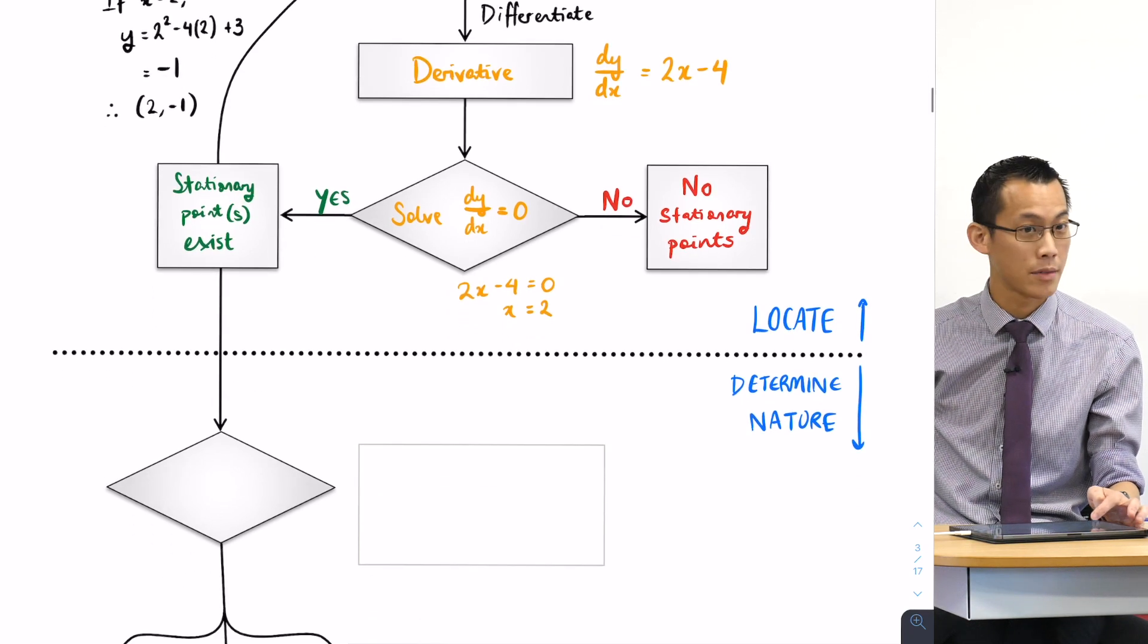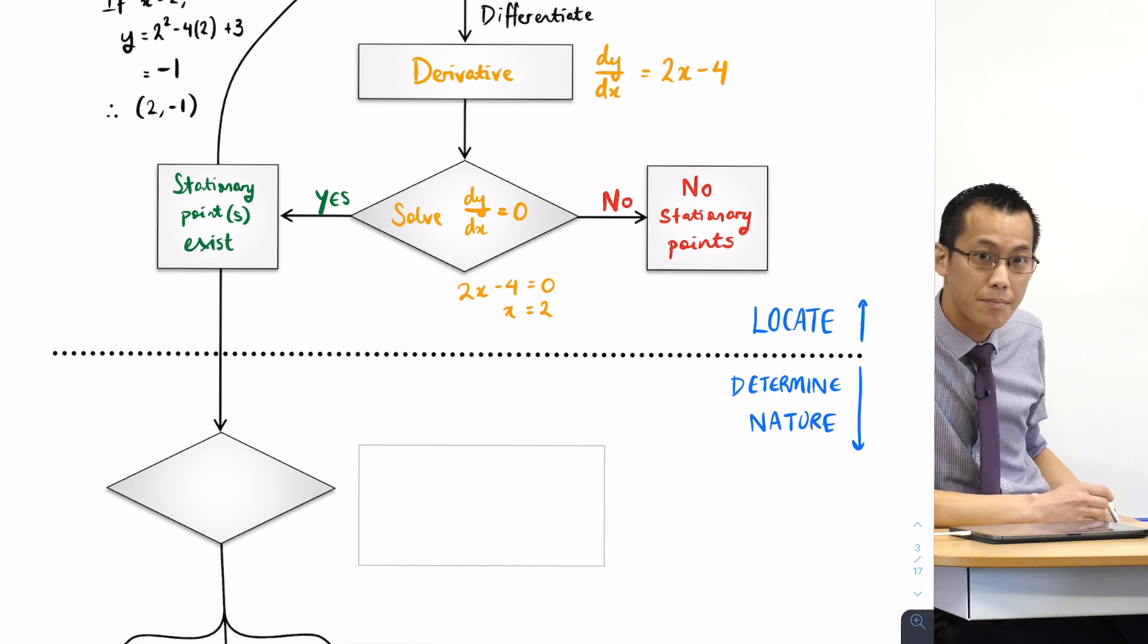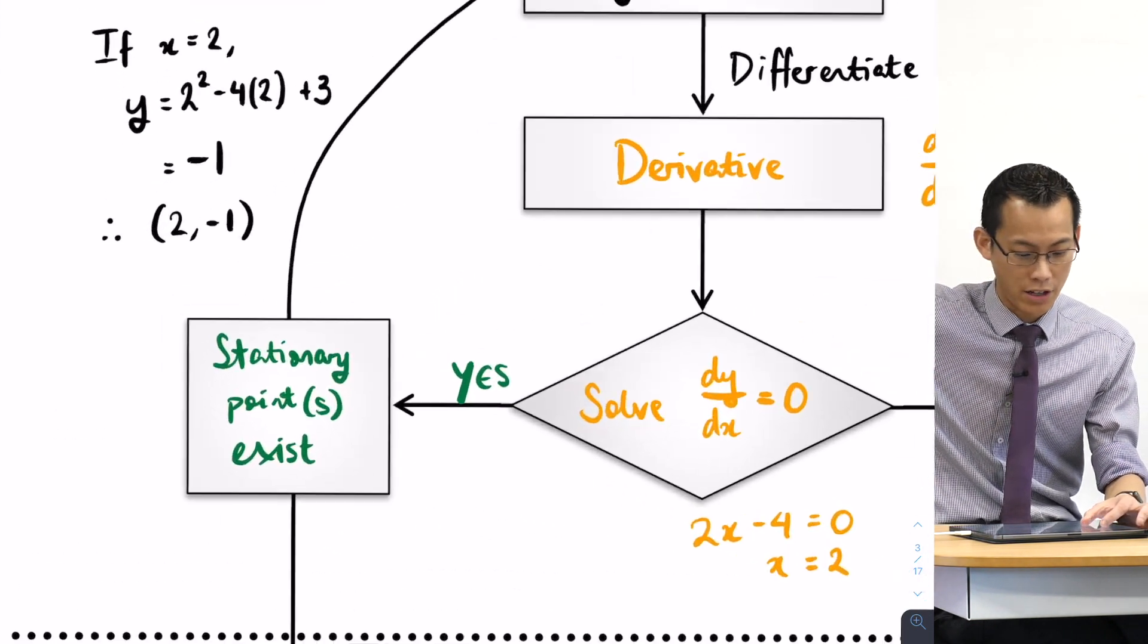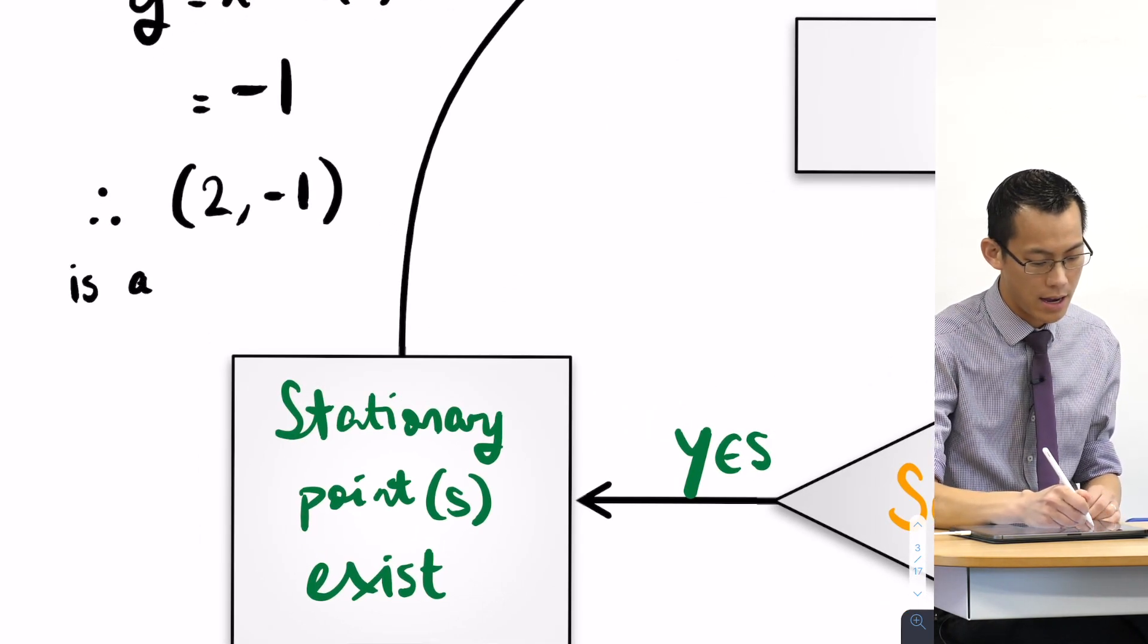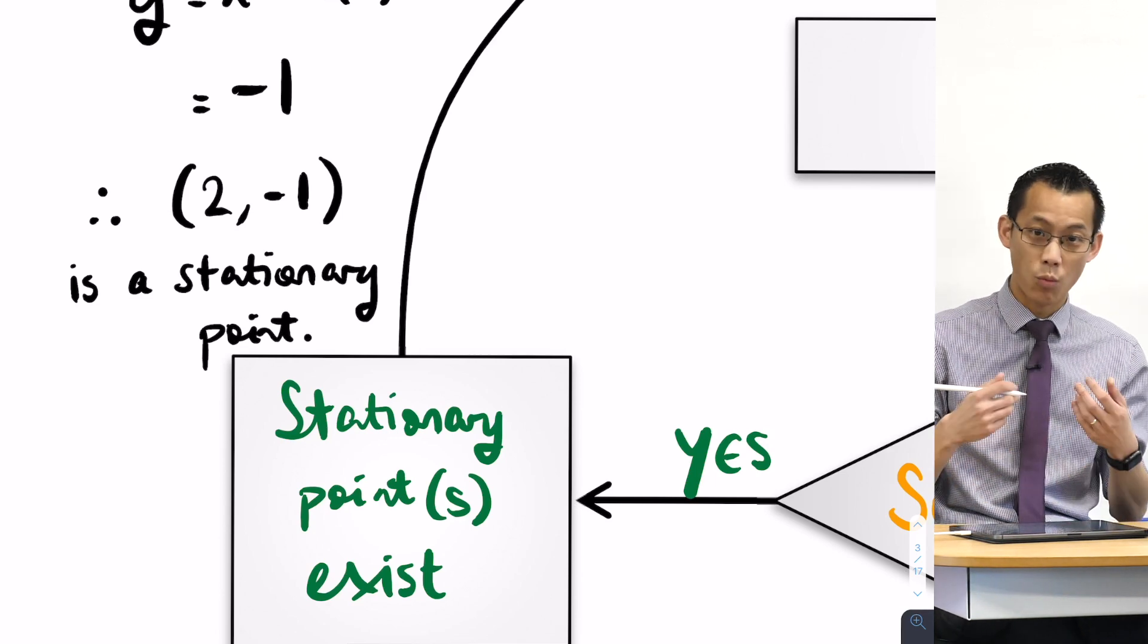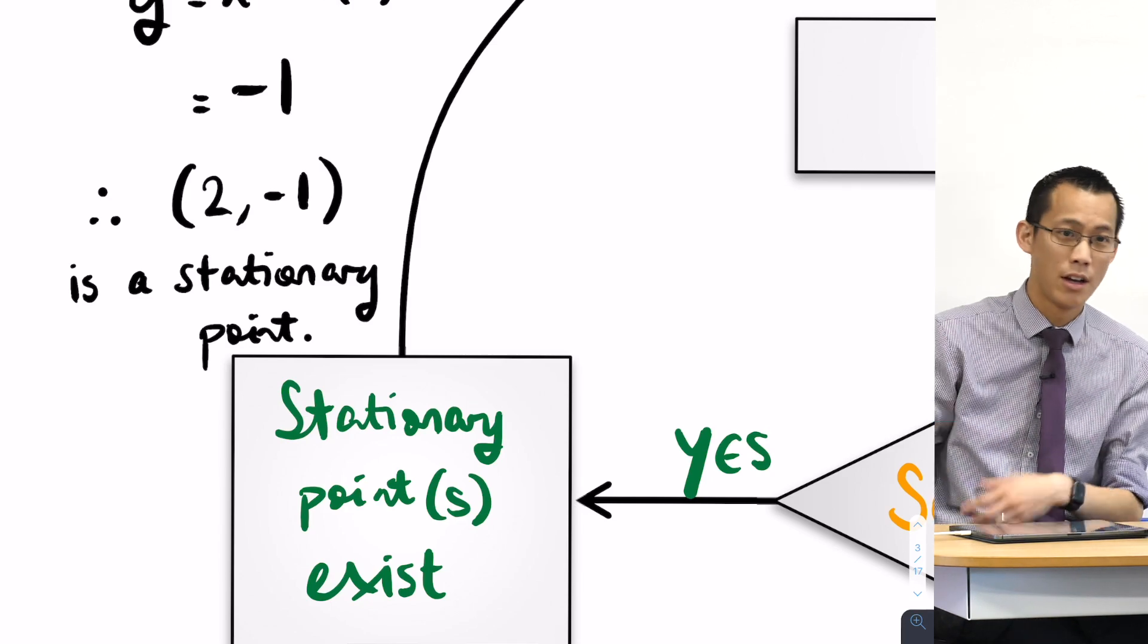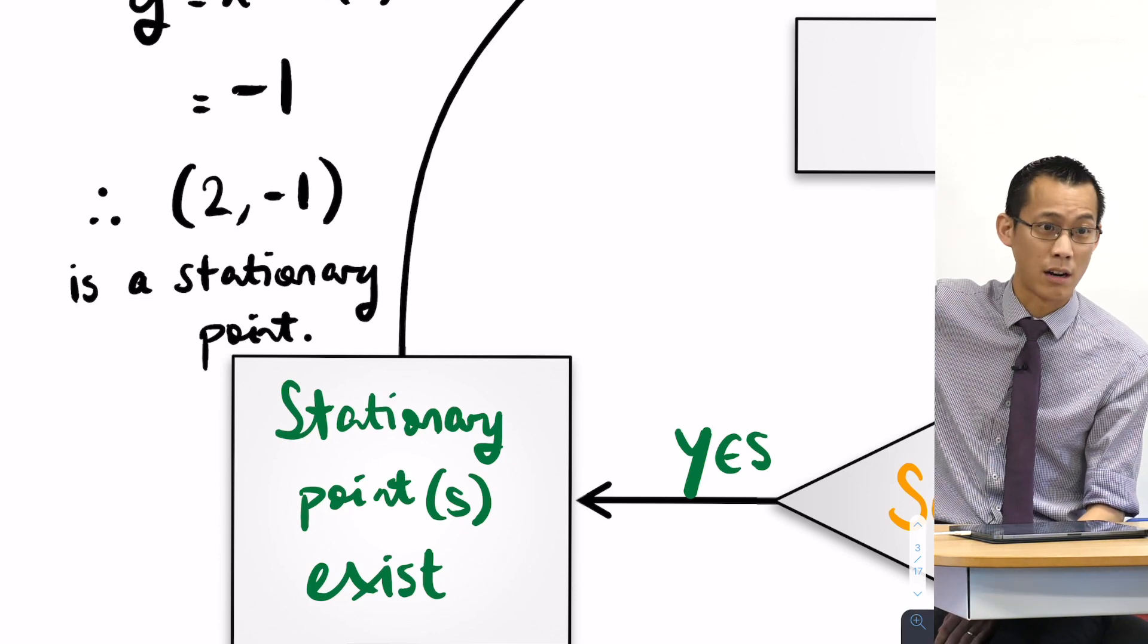At this point I'm half done I guess. I've located this stationary point. So far all I know is that this is a stationary point, because I don't know what kind of stationary point it is, that's all I can say. I could say that y equals x squared minus 4x plus 3 is stationary at this point. All these things are equivalent, but it's worth noting I don't usually conclude at this point. I usually go to the second half.